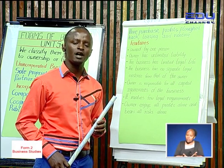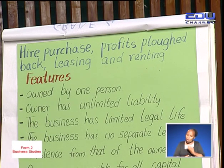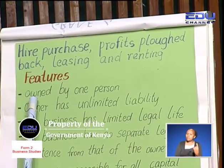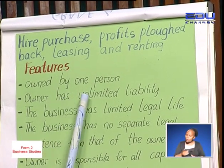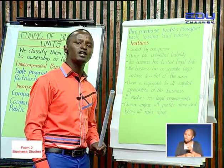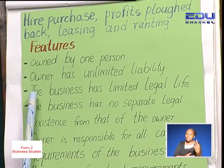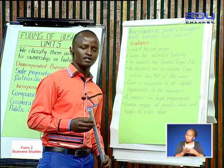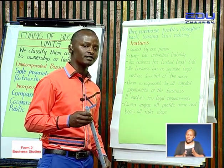Let us look at the features of sole proprietorship — these are the characteristics of sole proprietorship. Number one, this business is owned by one person. Number two, the owner has unlimited liability, meaning the owner can be called upon to pay the debts of the business in case the business is unable to meet its obligations. The third characteristic, the business has a limited legal life — that is, how long the business can exist is tied to the life of the owner. In case the owner dies, the business ends.